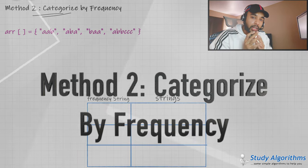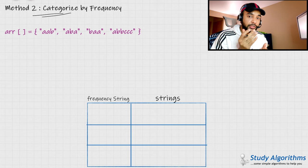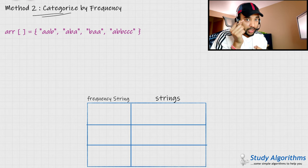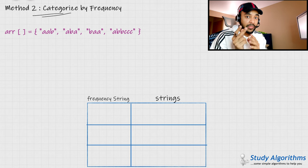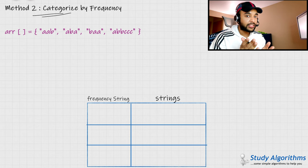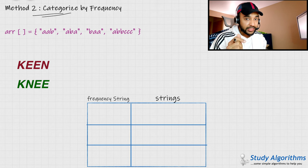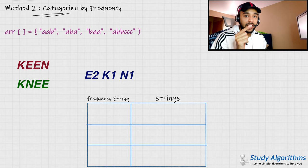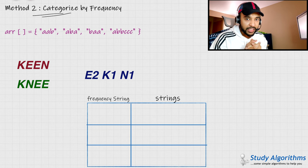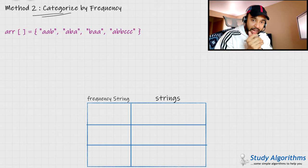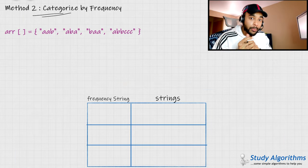We were able to take advantage of the fact that anagrams have the same characters. But also, if two strings are anagrams, then the frequency of those characters is also the same, and we can take advantage of this fact. Suppose we have the two strings 'me' and 'keen' — these two are anagrams. You can see that they are formed from the same characters, and in both strings you have two e's, one k, and one n.